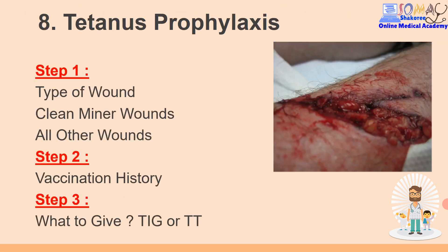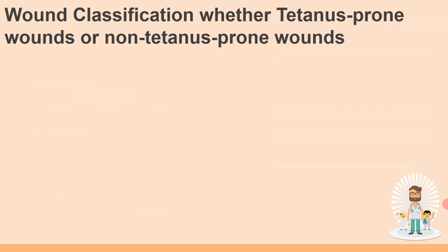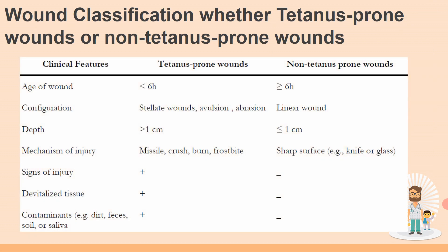Wound classification - as the first step, we want to know the type of wound: is it a clean wound or a dirty wound? This diagram will show you. If you have a wound less than six hours, this is considered tetanus-prone. If you have a wound more than one centimeter, this is tetanus-prone. If you have missile injury, crush, burn, or frostbite, those are tetanus-prone. If you have devitalized tissue, this is a tetanus-prone wound. If you have contamination by dirt, saliva, and soil, this is a tetanus-prone wound.